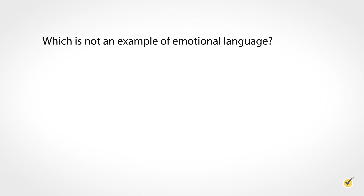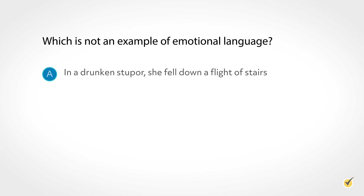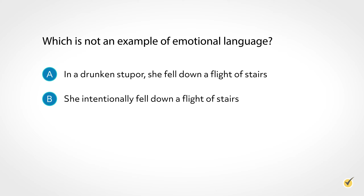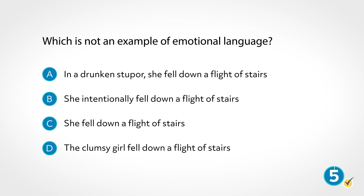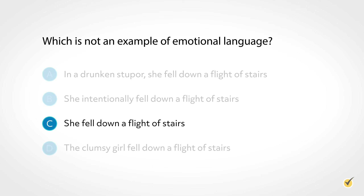Before we go, let's do a quick review of what we've learned — which is not an example of emotional language? If you picked C, you're correct. C is the only example that doesn't use emotional language that influences the reader's perspective of the girl and how she fell. That's all for this review. Thanks for watching and happy studying.